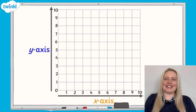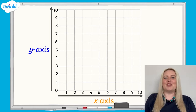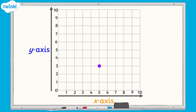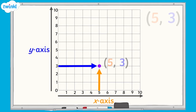Why do you think the x-axis and the y-axis are numbered? That's right, the numbers are used to help plot points on the grid. For example, to find the coordinates of this point on the grid, we would firstly look along the x-axis. We can see that the point is in line with 5 on the x-axis. We then look at the y-axis, and we can see that the point is in line with 3. So the point marked on this grid is found at 5, 3.